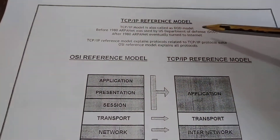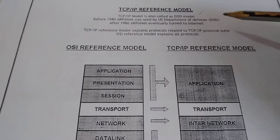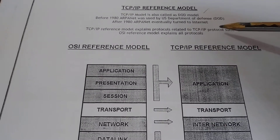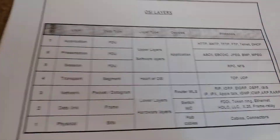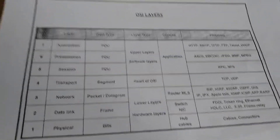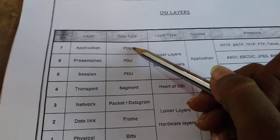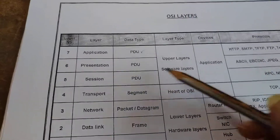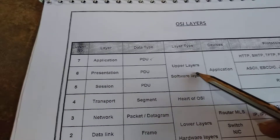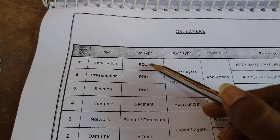This is the TCP/IP model, also called the DOD model, before 1999, developed by the US Department of Defense. This is an example of OSI layers. In the application layer, the data is in the format of a PDU. The first three layers are in the upper software layer, where data moves in the form of PDU format.